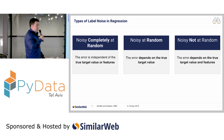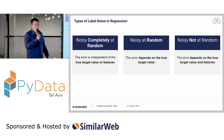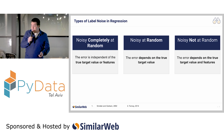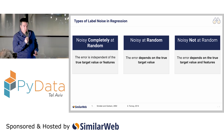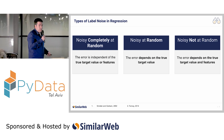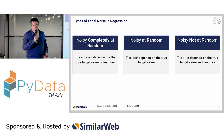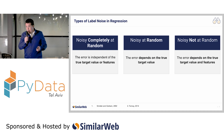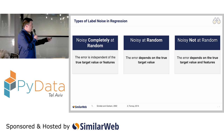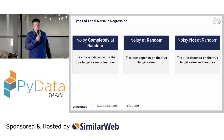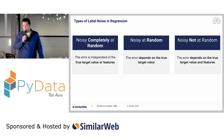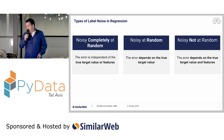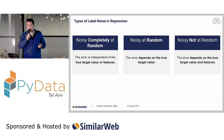In the same way that we examine classification, we can also examine regression tasks. In general, most of the time we assume that the error is additive and follows a zero-mean Gaussian distribution. But similar to the classification division, we can also define other categories, such as noisy at random, where the error depends only on the target value, or noisy not at random, where the error depends both on the target value and on the features.